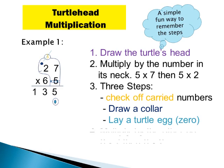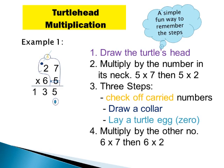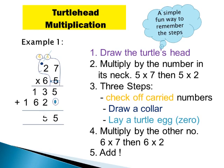Now multiply by the other number, 6. 6 times 7 equals 42 — write 2 down and carry the 4 to the next column. 6 times 2 equals 12, and 12 plus 4 equals 16. The last step is to add the two numbers: 5 plus 0 equals 5, 3 plus 2 equals 5, 1 plus 6 equals 7, and 1. So 27 multiplied by 65 is 1755.